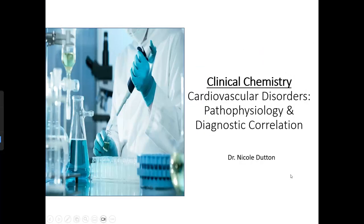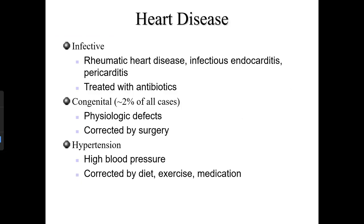Clinical chemistry cardiovascular disorders: pathophysiology and diagnostic correlation. There are different types of heart disease, including infective, congenital, and hypertensive. Infective types are related to rheumatic heart disease, infectious endocarditis, and pericarditis, and are treated with antibiotics. Congenital types involve physiological defects corrected by surgery.